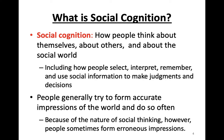Social cognition is how people think about themselves, about others, and about the social world. This includes how people select, interpret, remember, and use social information to make judgments and decisions. The assumption that social psychologists have is that people are generally trying to form accurate impressions of the world. However, because of the nature of our social thinking, we sometimes form erroneous impressions of other people.